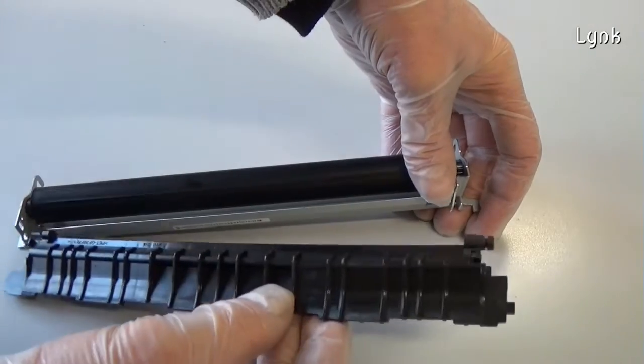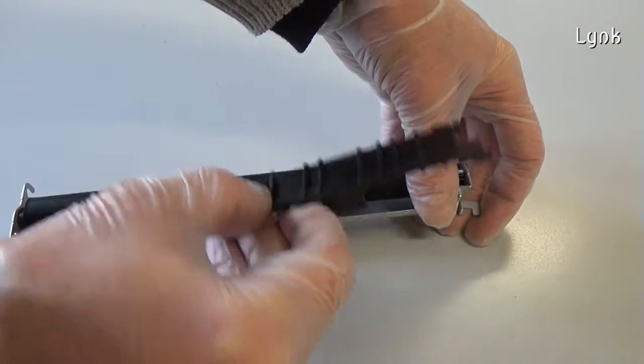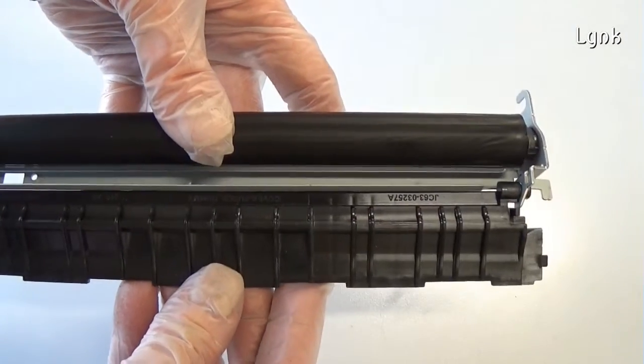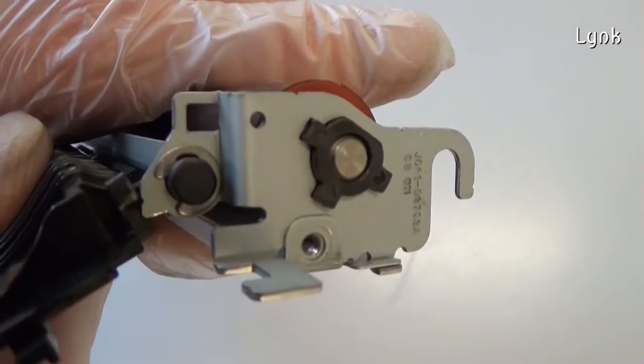Install the fuser roller cover. Insert the metal pin.